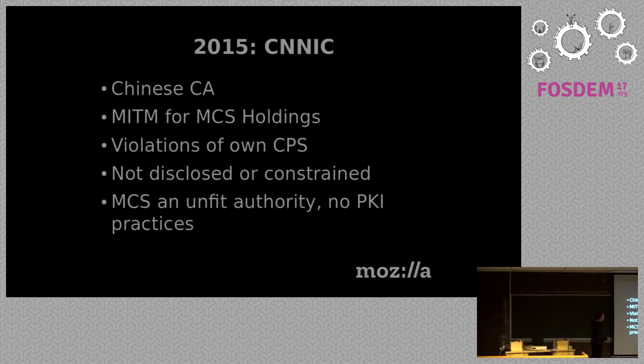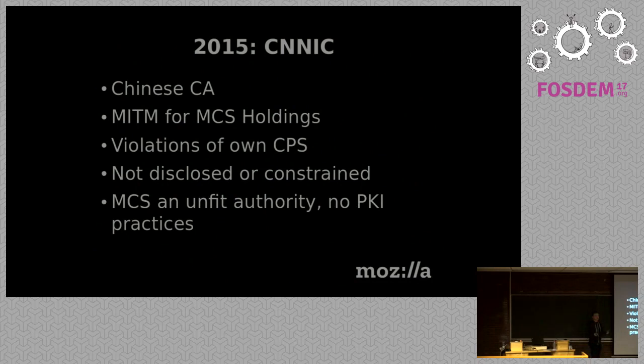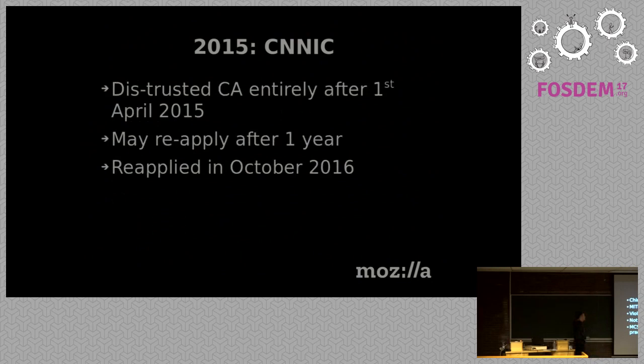In 2015, Chinese CA CNNIC issued a certificate for man-in-the-middle to a Middle Eastern company called MCS Holdings, in violation of its own certificate practice statement. They didn't disclose this intermediate as required by our intermediate disclosure rules. MCS had no PKI practices — we had no idea what they were doing with the certificate. We distrusted the entire CA, though said they could reapply after a year. They did reapply in October and are going through the reapplication process.